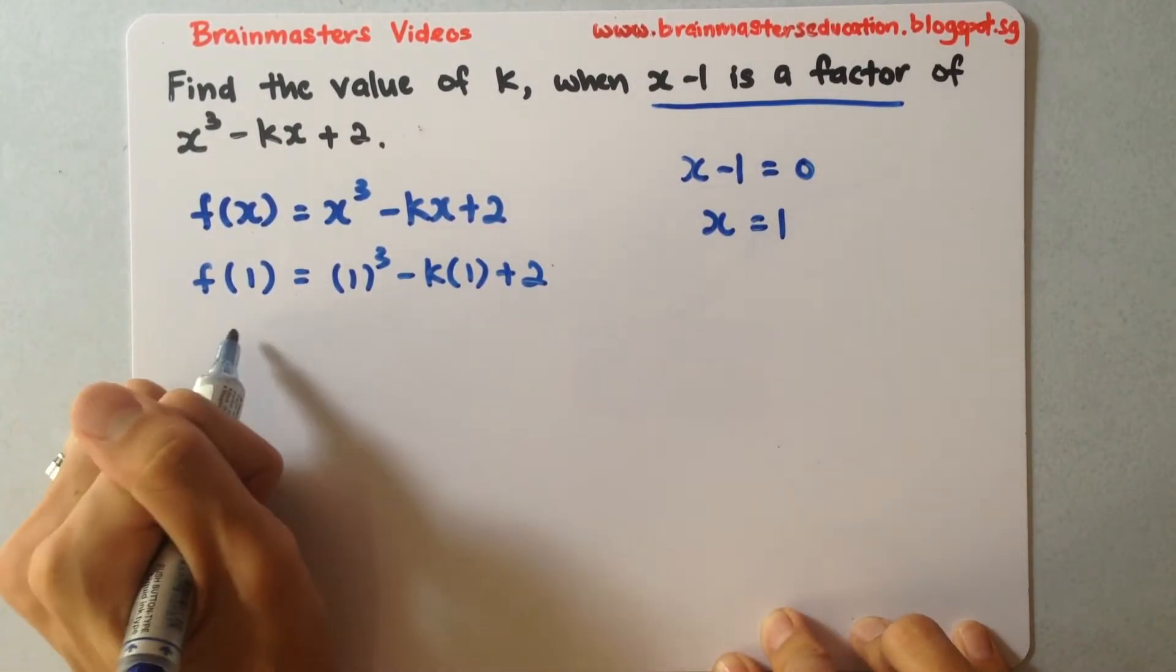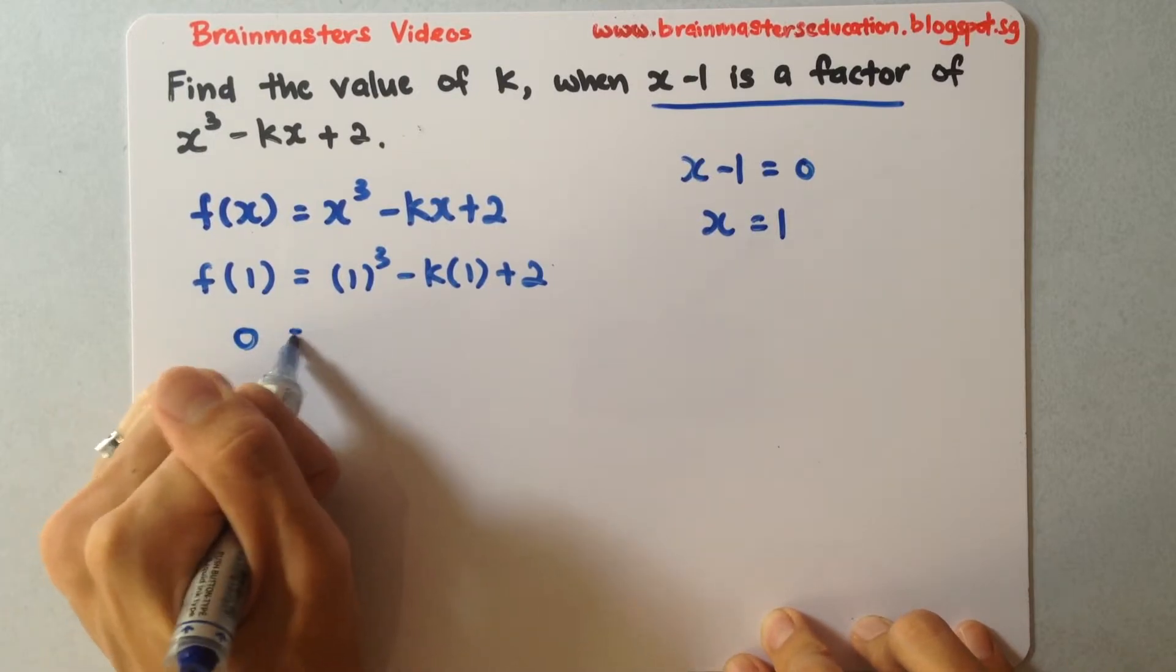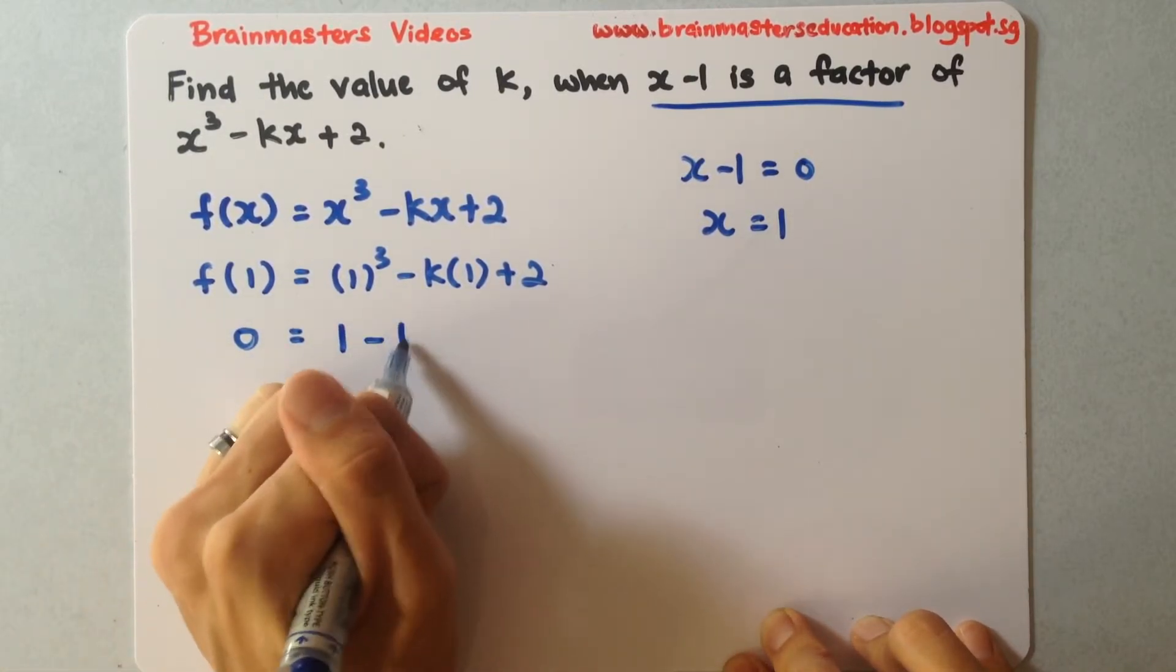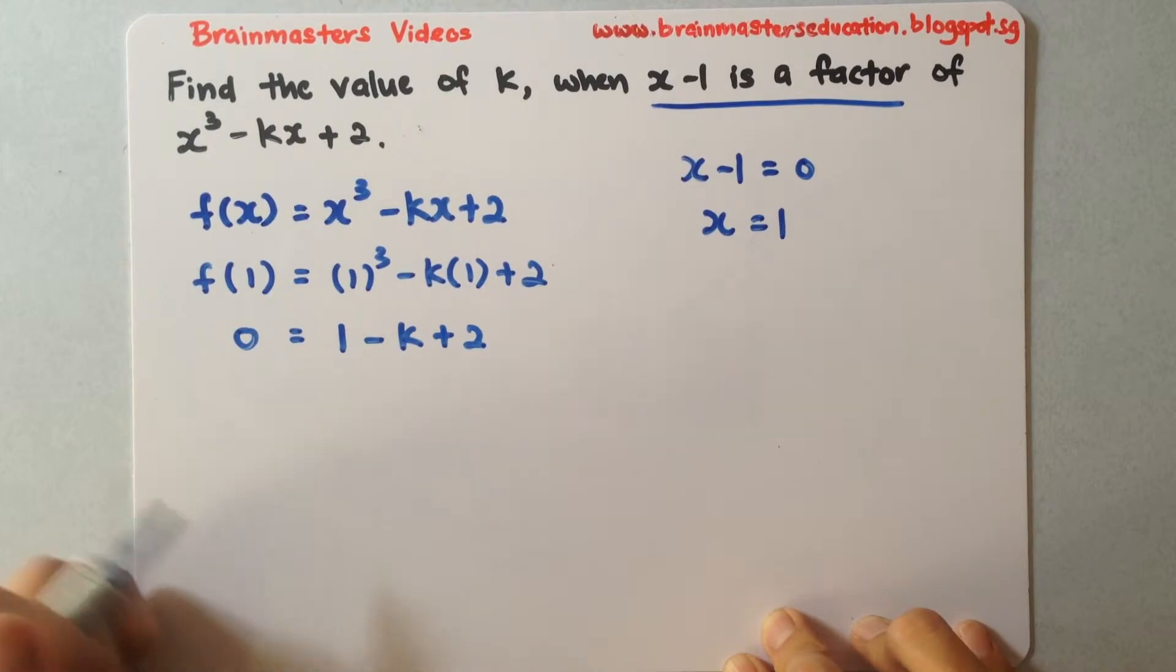Okay, so now I will simplify this knowing that the remainder is 0. I will just simplify this with a 1 minus k plus 2.